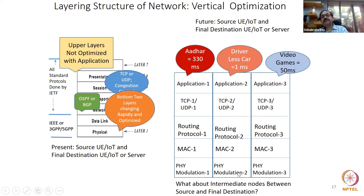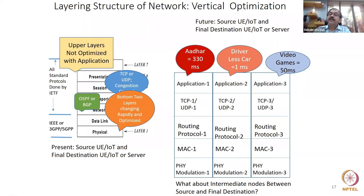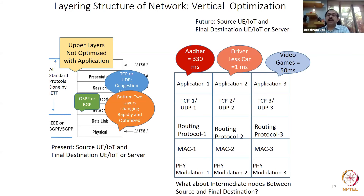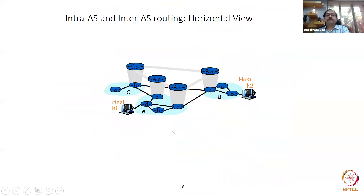The intermediate routers are informed according to your session number. The session number moves from source to destination, and accordingly these slices get activated to give you end-to-end performance. Host H1 and Host H2: going from my host to you, I cross the city backbone (intra-autonomous system), then the national backbone (inter-autonomous system). Different companies' networks are different autonomous systems — Airtel, Jio, BSNL — each is one autonomous system.